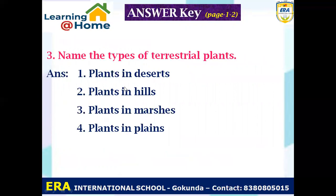The third question is: name the types of terrestrial plants. There are four types — one: plants in desert, two: plants in hills, three: plants in marshes, and four: plants in plains. Every student should write these answers and make a separate notebook to check later.